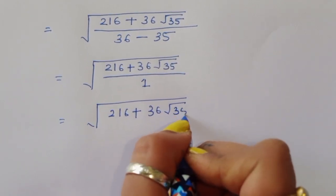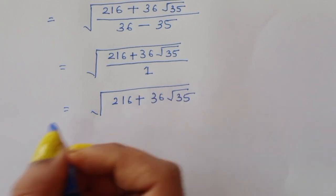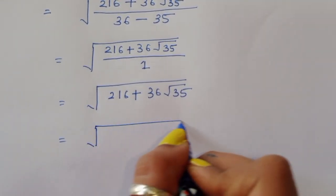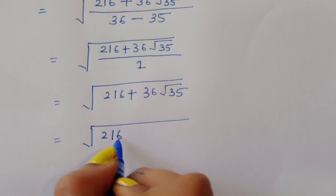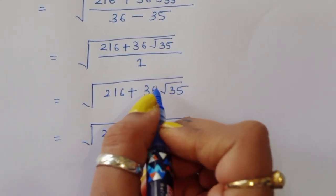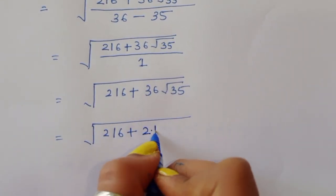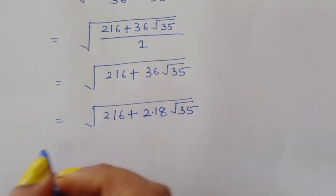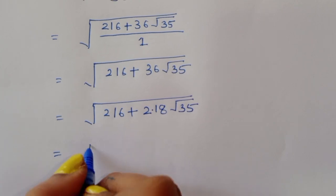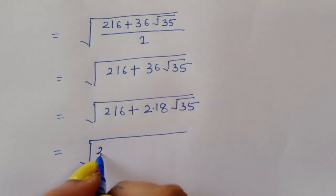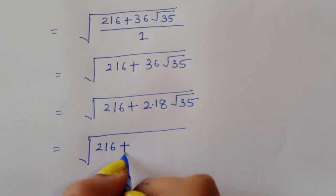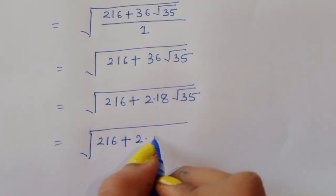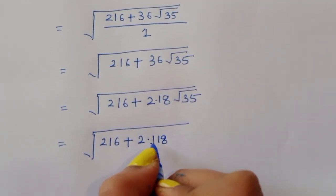So we are left with 216 plus 36 square root of 35. We can rewrite 36 as 2 times 18, giving 216 plus 2 times 18 square root of 35. Then we write 18 as (square root of 18) squared.